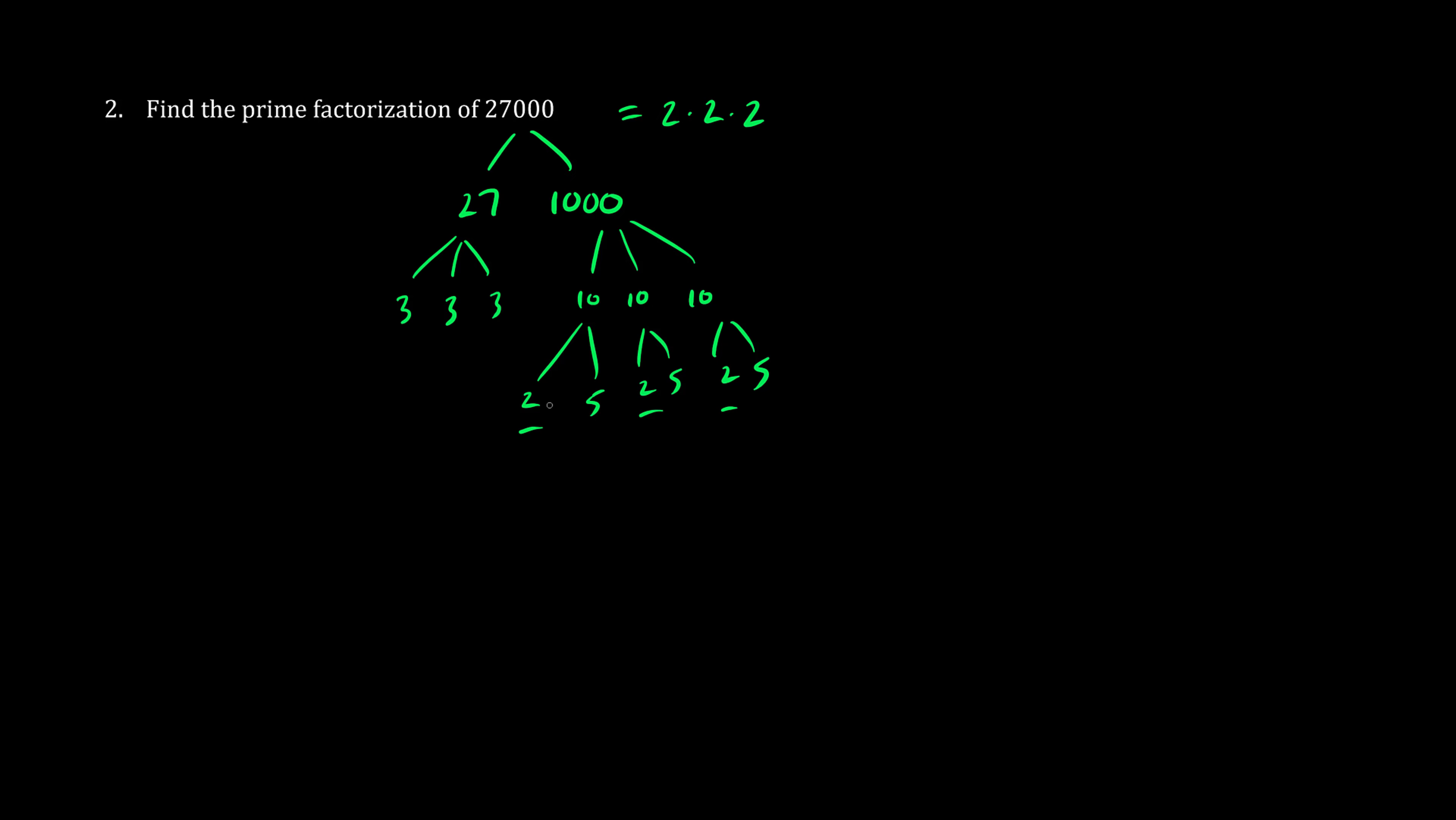And we have threes, three times three times three, and we have fives. So the prime factorization of 27,000 is 2 cubed multiplied by 3 cubed multiplied by 5 cubed.